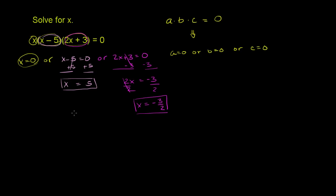And we could check them. If you put x is equal to 0 into this first thing, what's going to happen? You're going to have 0 times 0 minus 5, which is negative 5, times 2 times 0, 0 plus 3, times 3. Now clearly this is equal to 0. I didn't even have to evaluate these two things. I had a 0 here. 0 times anything else is going to be equal to 0. So that works.